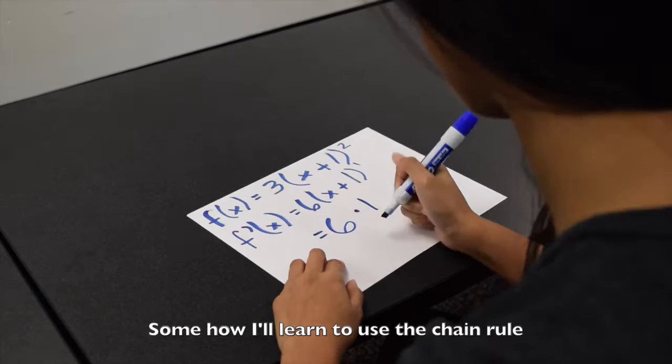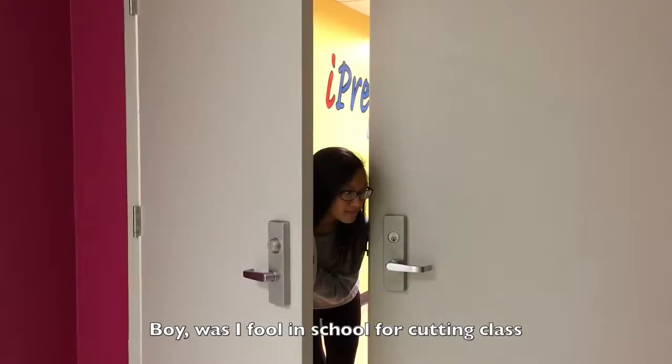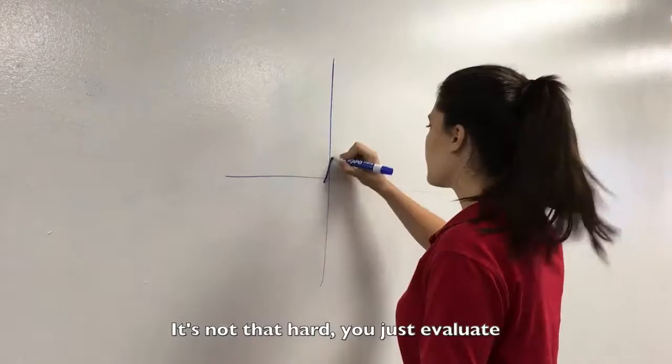Somehow I'll let you use the chain rule. Now let's start learning limits, they approach from the left to right. Boy was I a fool for cutting class. This equation got me scared to death, hopefully I could get it right. It's not that hard, you just evaluate.